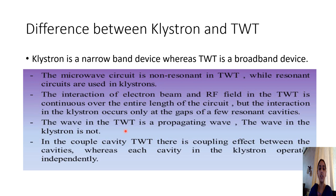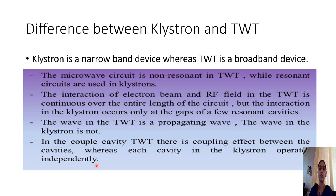Another difference is that the wave in the traveling wave tube is a propagating wave, whereas in the klystron the RF field is stationary — only the electron beam is traveling. In the TWT, both the RF field and the electrons travel and interact over the whole length of the tube. Also, in a coupled cavity TWT there is coupling between cavities, whereas each cavity in the klystron operates independently.